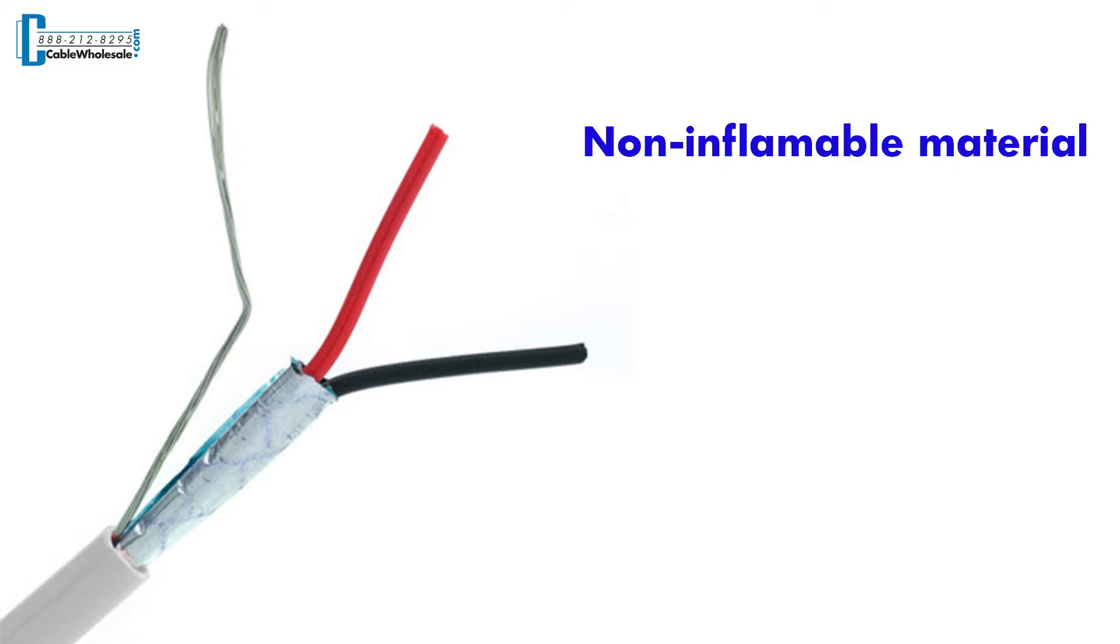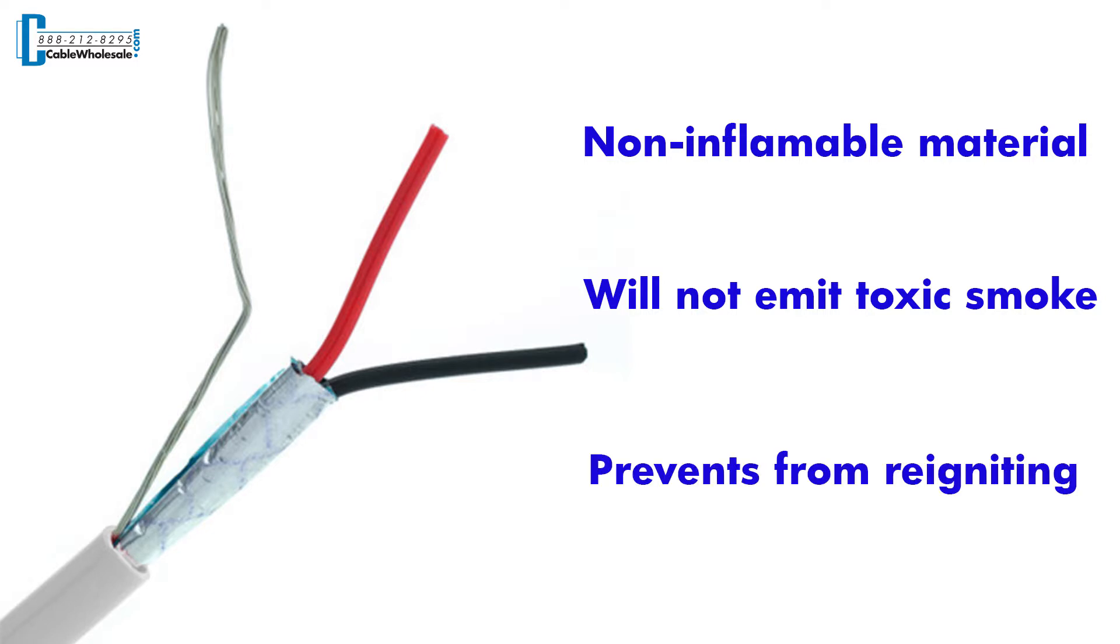This type of jacket ensures that the cable will not emit toxic smoke into the building's air return in the event of a fire. This kind of jacket also prevents a cable from reigniting after it has initially been extinguished.